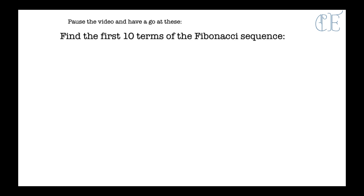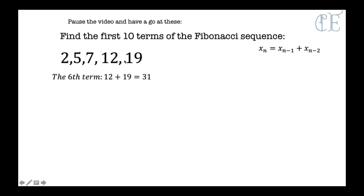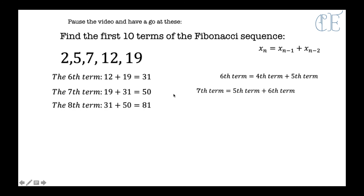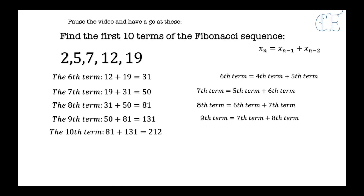Pause the video and find the first 10 terms of this Fibonacci sequence — it's a different sequence but the same rules apply. The first 5 terms are given. The 6th term is 12 plus 19 which is 31. The 7th term is 19 plus 31 which is 50. Then 31 plus 50 gives 81, then 50 plus 81 gives 131, and finally 81 plus 131 gives 212. Those are the first 10 terms.